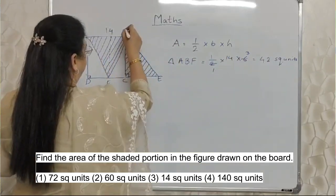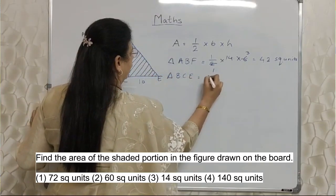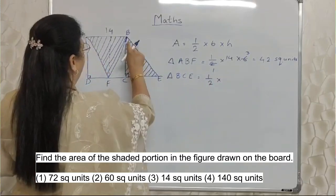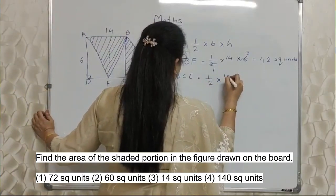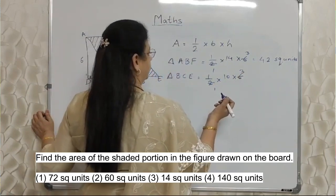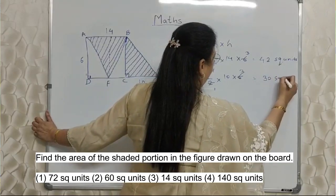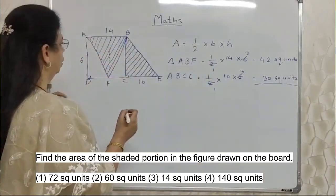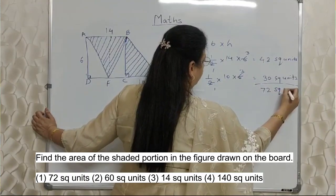Now let's find out the area of triangle V, C, E. Again, half of base — which is 10 — and height is again 6. So half into 10 into 6: 10 into 3 is 30 square units. So the total area of this shaded portion — the addition of these two — is 72 square units.